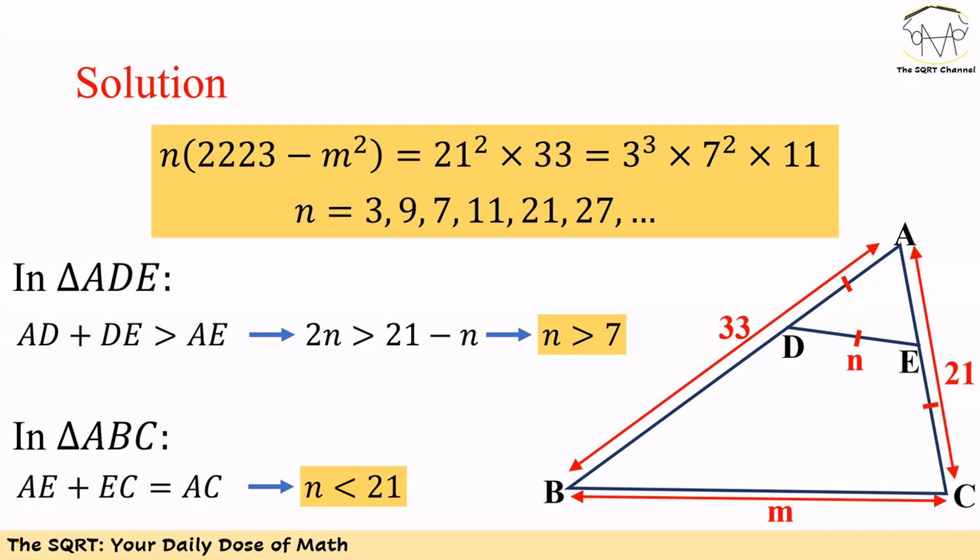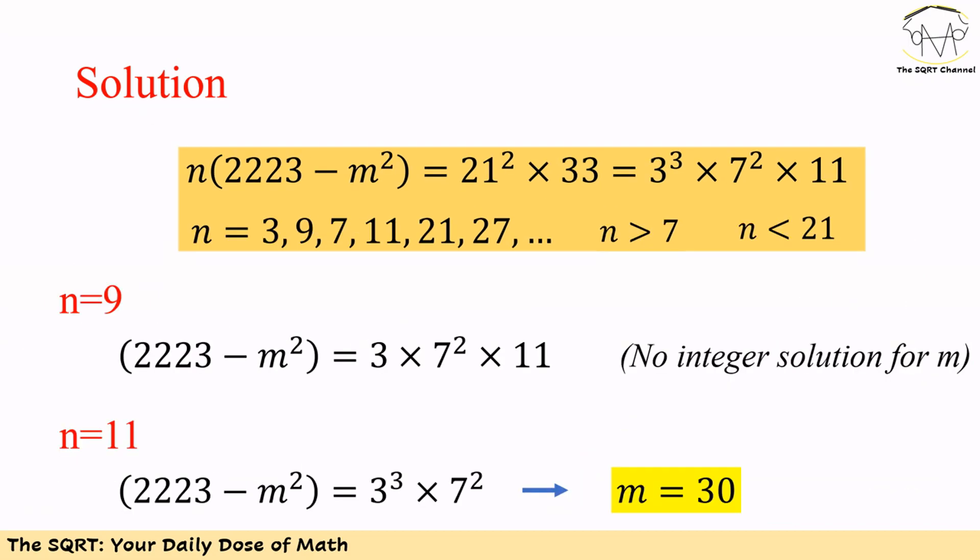Now we have two conditions to meet. The first one is N should be greater than 7, and the second one is N should be less than 21. We are going to find those Ns from this list that meet these conditions. Obviously N cannot be 3 or 7, and it cannot be more than 21, so 27 and those numbers that are greater than 21 are not acceptable.